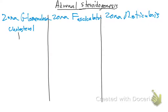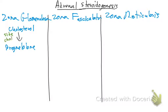Cholesterol is going to produce pregnenolone using the side chain cleavage enzyme. So cholesterol, via the side chain cleavage enzyme, becomes pregnenolone.